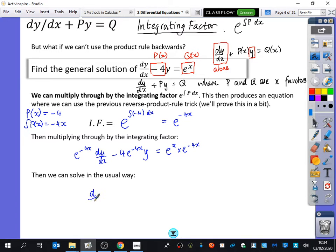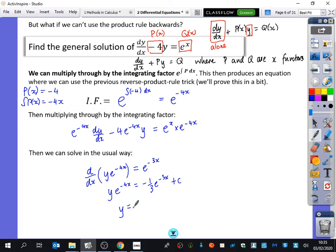So the left-hand side is the derivative of what? y e to the minus 4x, and the right-hand side that we have still here is e to the minus 3x. So we then get y e to the minus 4x is equal to minus a third e to the minus 3x plus c. So y equals minus a third e to the minus 3x plus c e to the minus 4x.